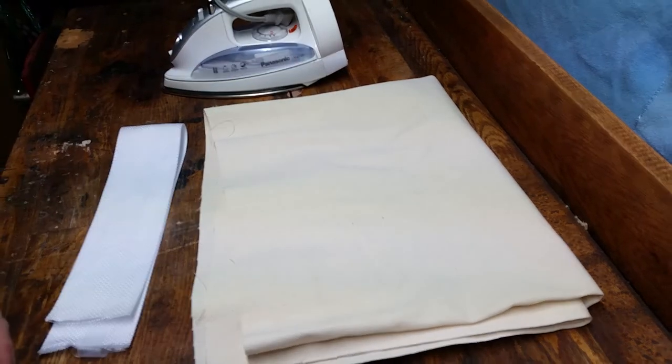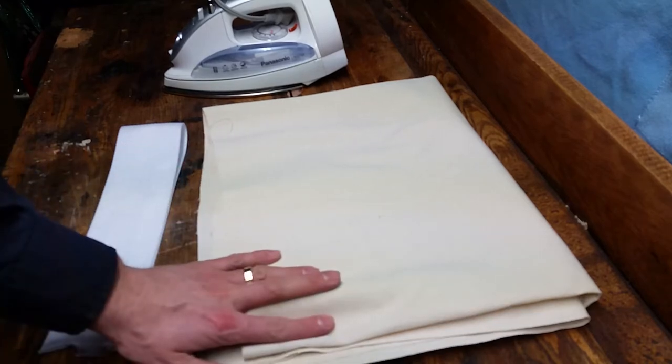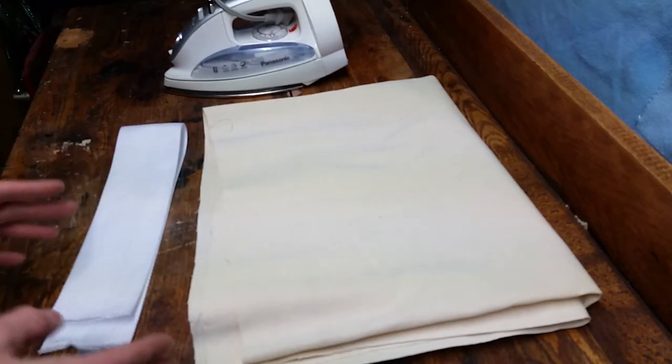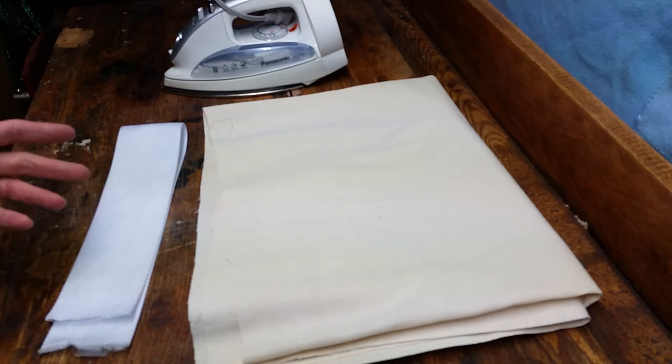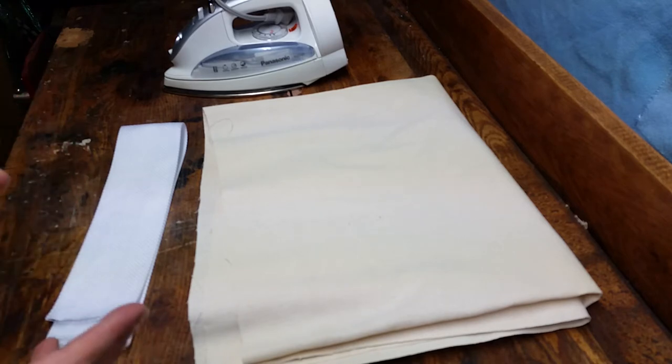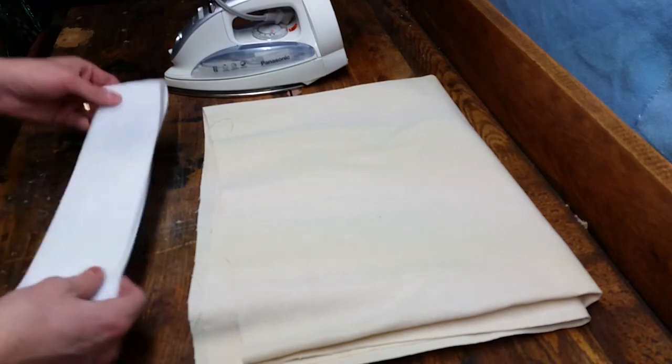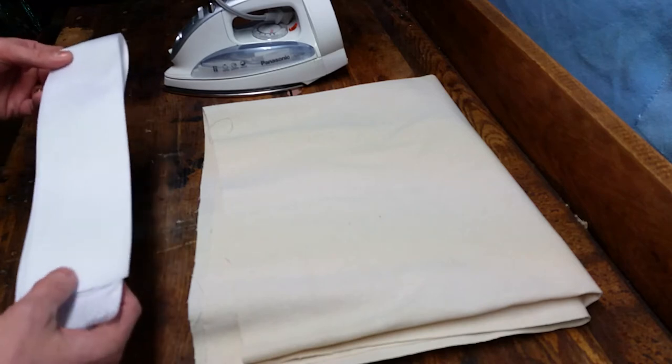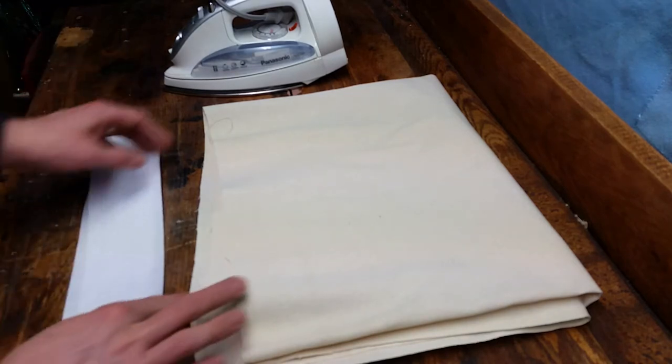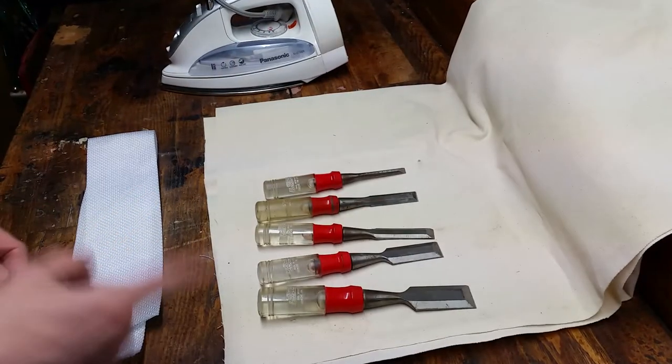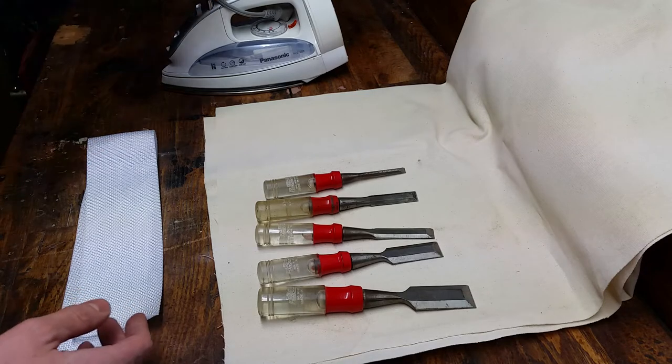The actual materials we're using - we're going to use what's called shoe canvas. A square meter of it was less than five dollars Canadian. We're going to use some two-inch webbing for reinforcement, and of course we'll need the tools that we're going to custom fit.